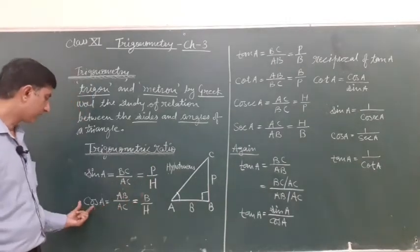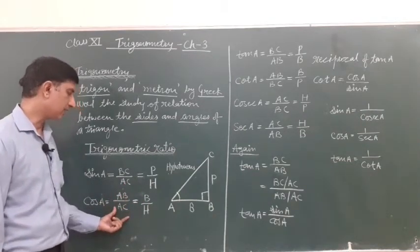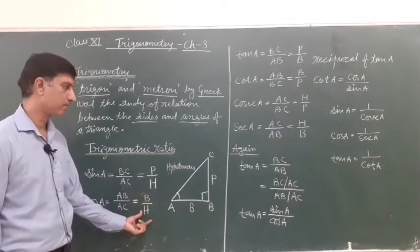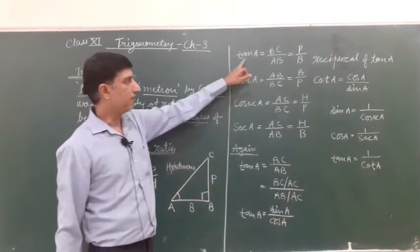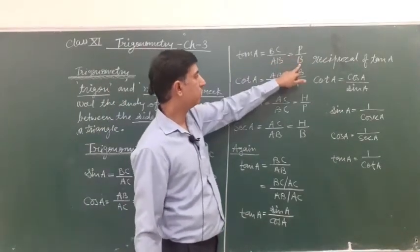Second cos A, it is represent by AB upon AC or B upon H. Third tan A, it is equal to BC upon AB or P upon B.